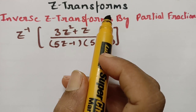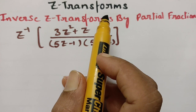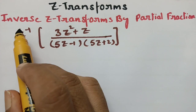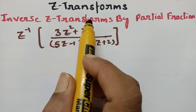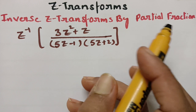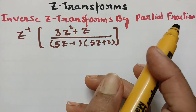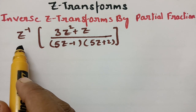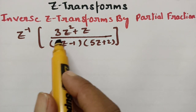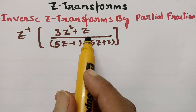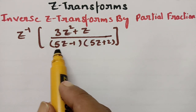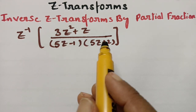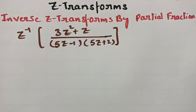Today's video is on Z transforms. We are going to find out the inverse Z transform using partial fractions. The question is: find the inverse Z transform of (3Z² + Z) / ((5Z - 1)(5Z + 2)).